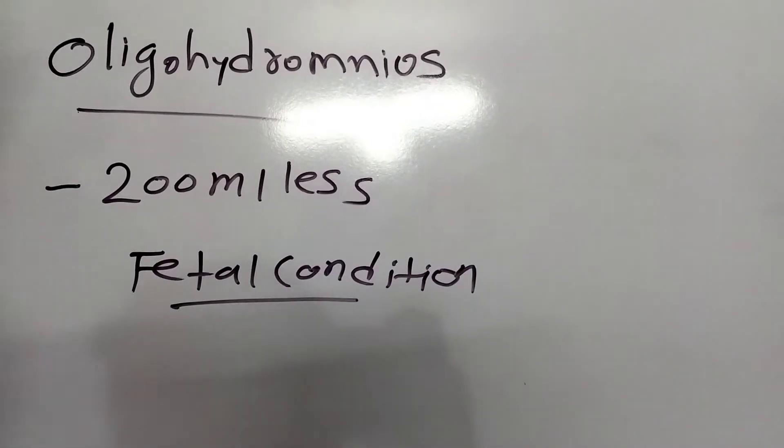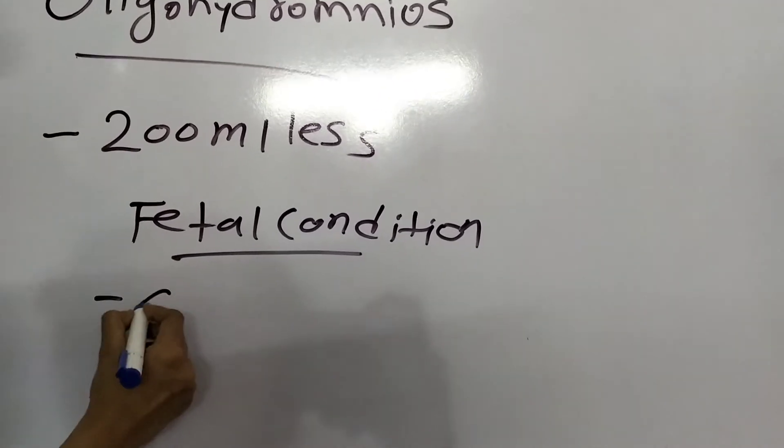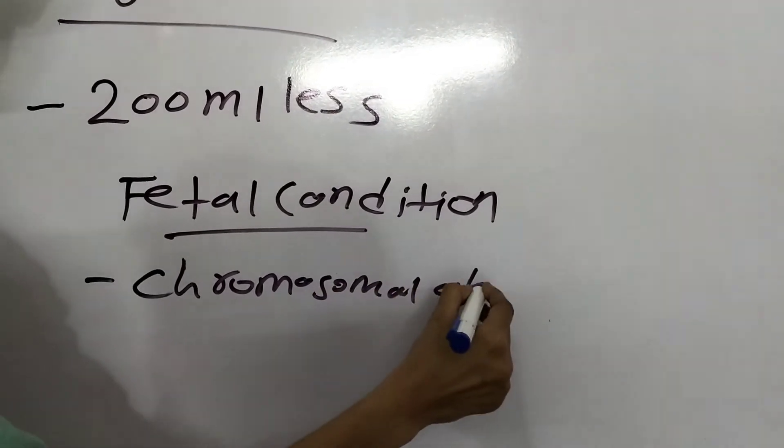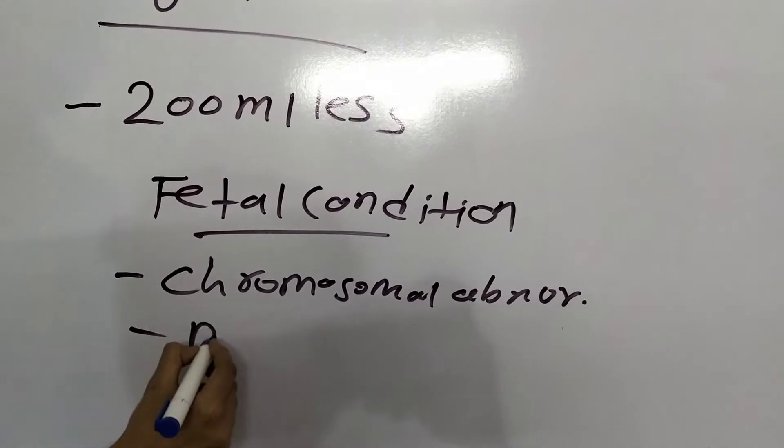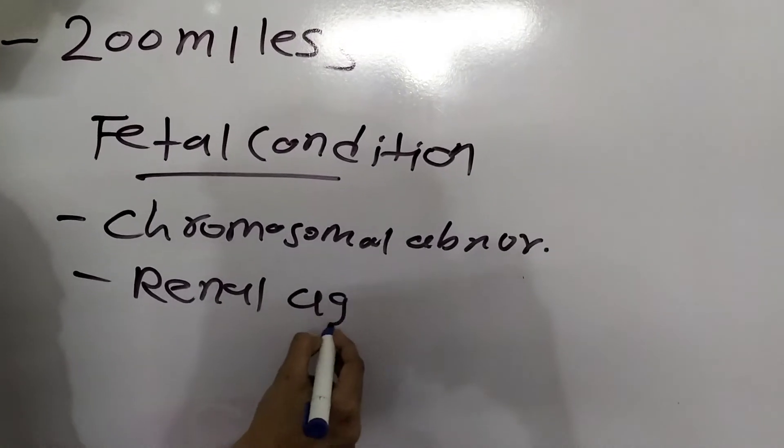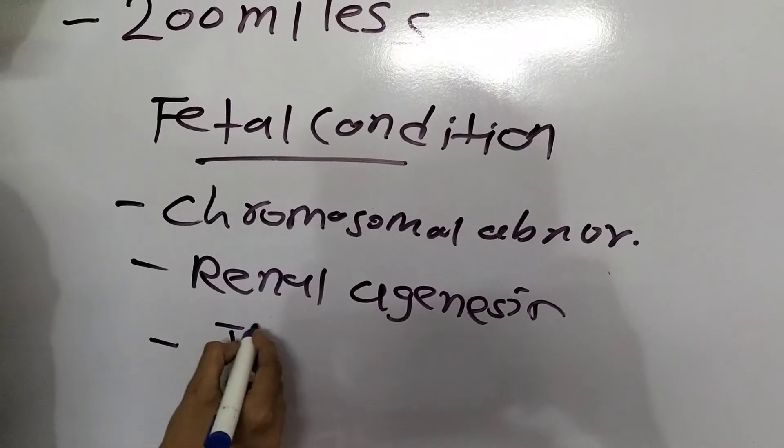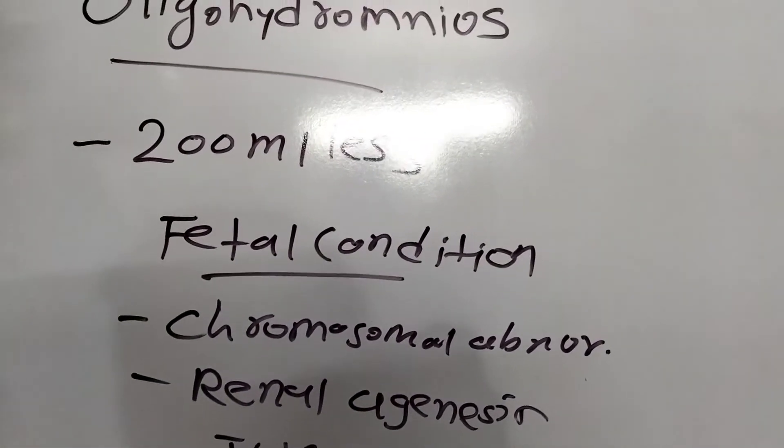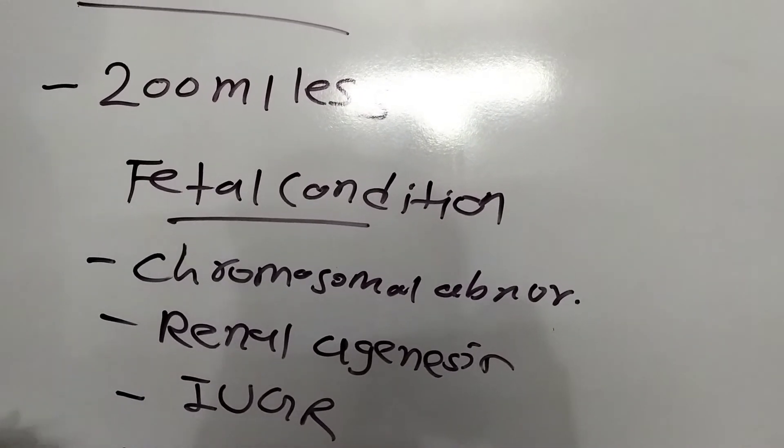What are the fetal conditions that cause oligohydramnios? The baby has any chromosomal abnormality, any renal agenesis, meaning absence of one or both kidneys, IUGR (intrauterine growth retardation), intrauterine infection, and post-maturity, meaning pregnancy going beyond 42 weeks.